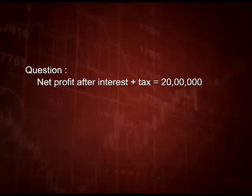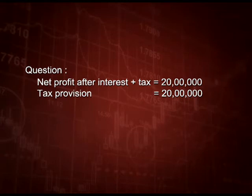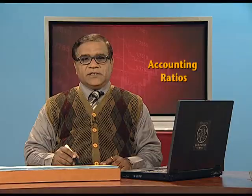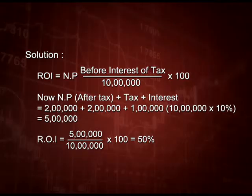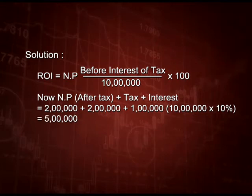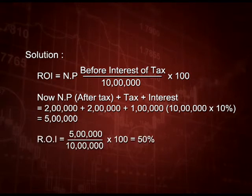Let us start a question on return on capital employed. Net profit after interest and tax is 2,00,000, tax provision is 2,00,000, there are 10 percent debentures of 10,00,000, and capital employed is 10,00,000. Return on investment equals net profit before interest and tax divided by capital employed into 100. The given profit is after interest and tax, so we add back tax provision 2,00,000 and interest 1,00,000 (10 percent of 10,00,000), giving 5,00,000. Dividing 5,00,000 by 10,00,000 into 100 gives 50 percent.